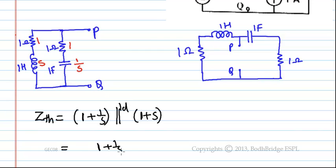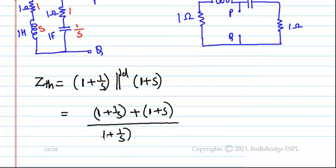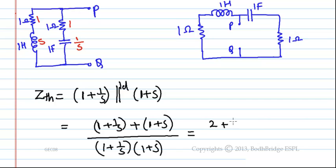This is 1 plus 1 by s plus 1 plus s divided by 1 plus 1 by s into 1 plus s. This equals s plus 1 by s plus 1 by s divided by 1. Here we have 1 into 1 plus 1 by s into 1 by s plus s into 1, which gives 1.